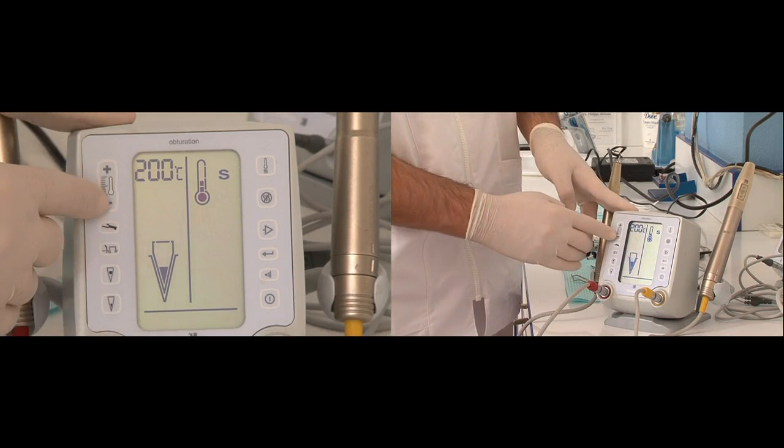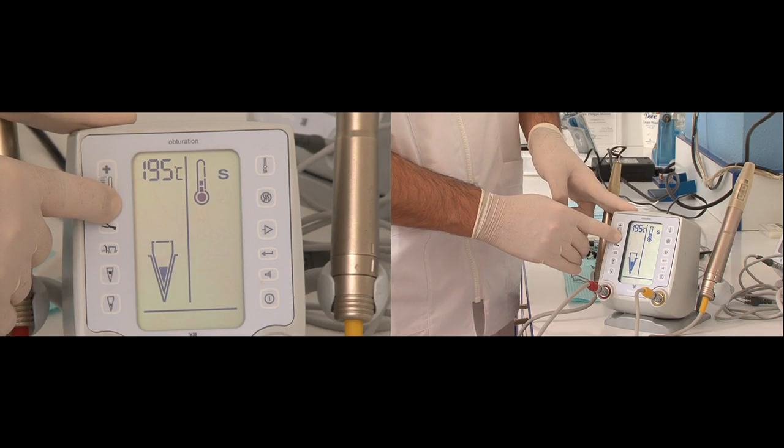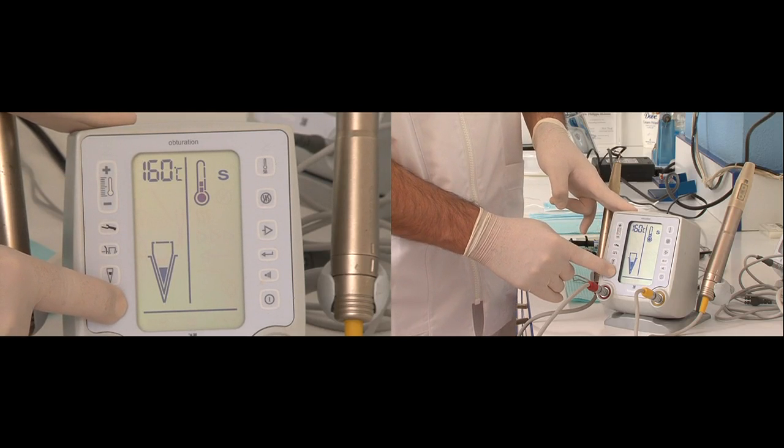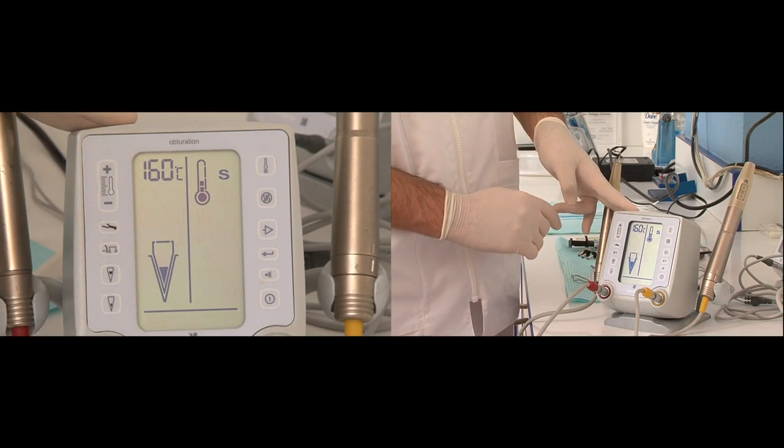So 200 is for gutta-percha, 160 for RealSeal. We can preset it, press on the button for three seconds and the unit is set for 160 degrees.